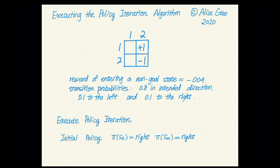Hello everyone, this is Alice Gal. In the previous videos, I talked about the high-level ideas of the policy iteration algorithm. To make it more concrete, let me now run through an entire example executing the policy iteration algorithm. Obviously, we can't do this with a very large example because I have to calculate everything by hand, so I constructed a tiny example that we can work with.